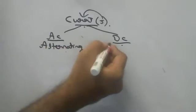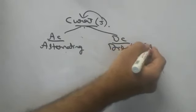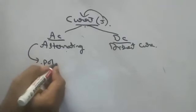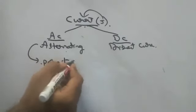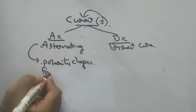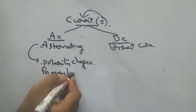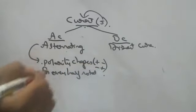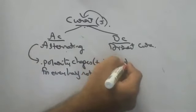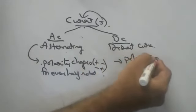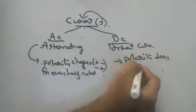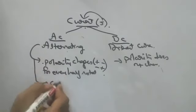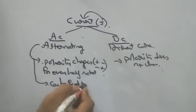DC means direct current. Number two difference: in AC, polarity changes — polarity changes for every half rotation. What do you mean by polarity? Plus becomes minus, minus becomes plus. In DC, polarity does not change.